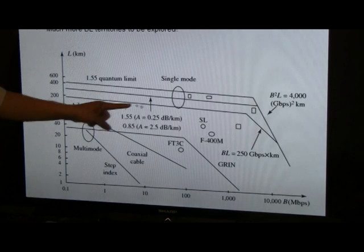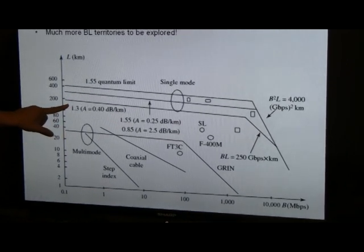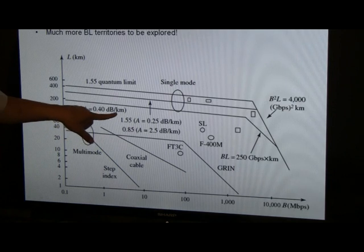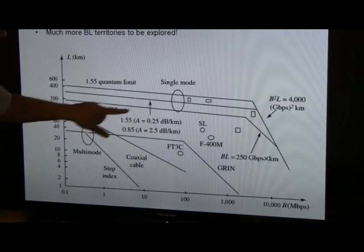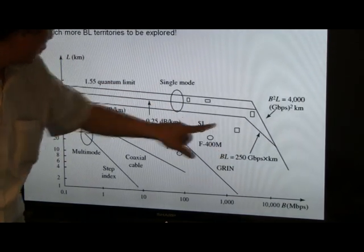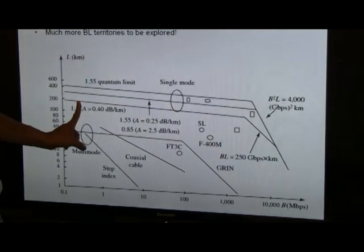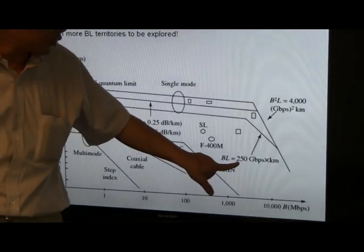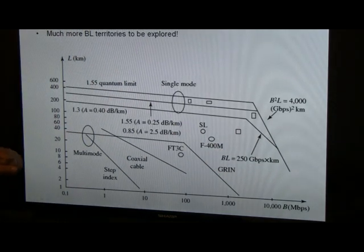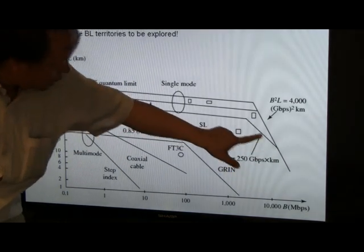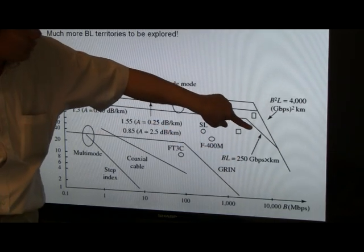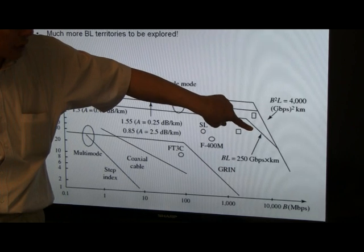We have, in this case here, three separate curves. The first one being 1.3 micron at 0.4 dB per kilometer attenuation. You have a 45-degree here whereby the 1.3 micron single-mode fiber will have a BL product of 250 gigabits per second kilometer. This 45-degree line is due to the BL product.